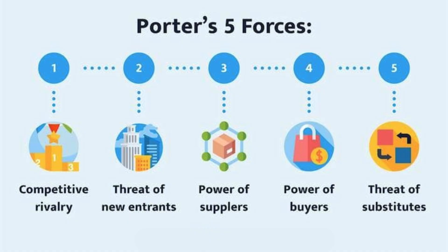The bargaining power of suppliers analyzes the influence suppliers can have on businesses in the industry. When there are few suppliers, or when they offer unique or essential inputs, their bargaining power is high, which can lead to increased costs for businesses. Conversely, if there are many suppliers or alternative sources, the bargaining power of suppliers is lower, benefiting the businesses.